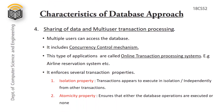Next characteristic is sharing of data and multi-user transaction processing. Multiple users can access the database, so it must include a concurrency control mechanism, which manages simultaneous access and prevents two users from editing the same record at the same time. These types of applications are called online transaction processing systems, such as airline reservation systems. It enforces transaction properties: isolation — transactions appear to execute independently from other transactions — and atomicity, which ensures that a transaction must either be executed completely or not at all.